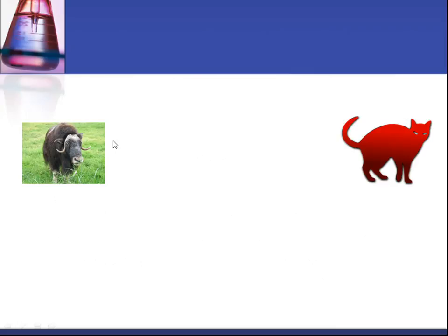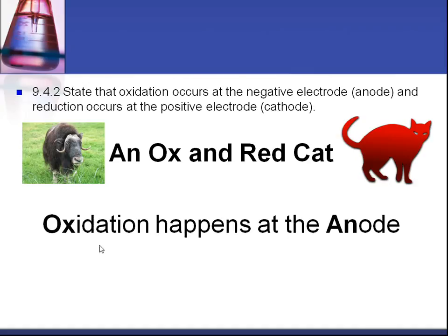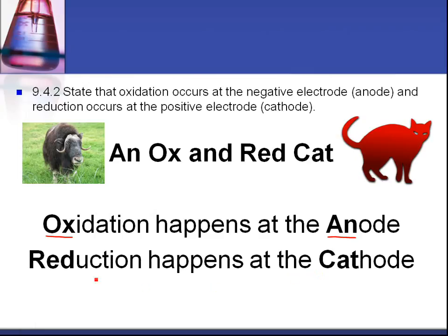Okay, so we've got two pictures here. We've got an ox on the left and a red cat on the right. Why have we got those? Well, a useful phrase to help you remember 9.4.2 is 'an ox and red cat.' This is an ox on the left, that's a red cat on the right. It means oxidation happens at the anode, an ox. Oxidation happens at the anode. And red cat: reduction happens at the cathode. So you have to learn these two phrases, and an easy way to remember that is an ox and red cat.